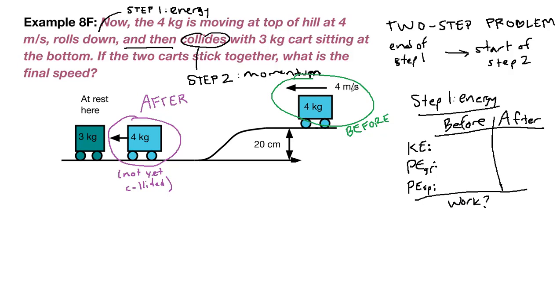Let's go through some yes or no questions. At the beginning of the problem are we moving? Yes because we have this piece of information: 1 half mv initial squared. At the beginning are we higher? Yes, we are at the top of the hill. Is there a spring? No. Are we moving at the end of the step 1 energy problem? Yes. Are we higher at the end? No. Is there a spring? No.